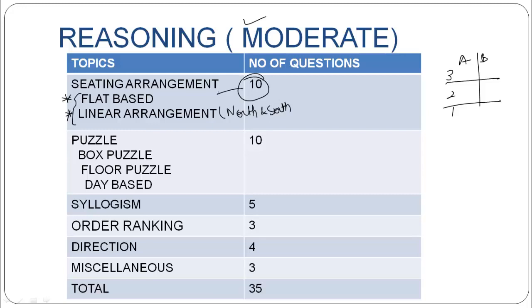Total 10 questions were asked from this topic. Puzzles were of 3 types. One box puzzle, one floor puzzle, and day-based. Day-based were from Monday to Sunday. Floor were of 10 floors, and box were of 8 boxes. Total 10 questions were asked from this section.